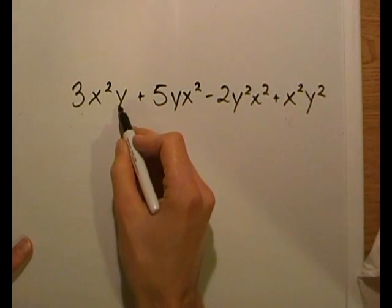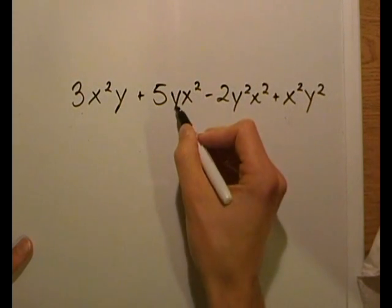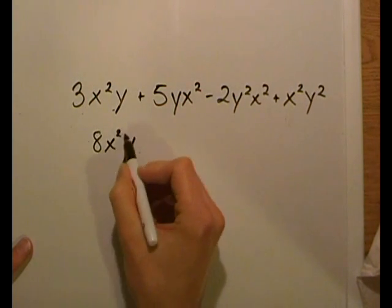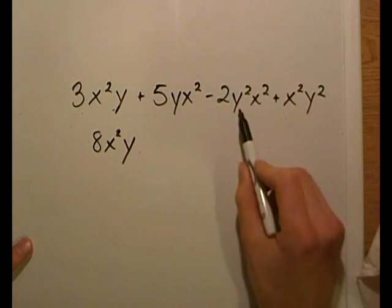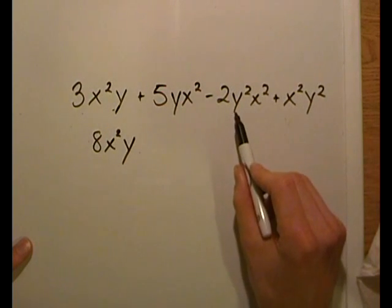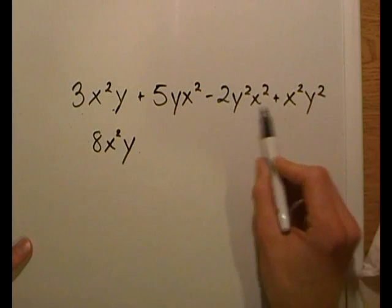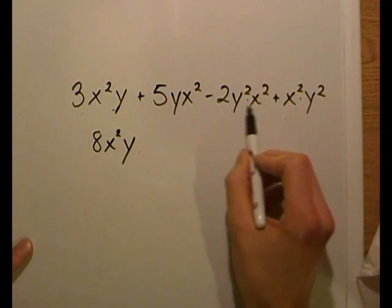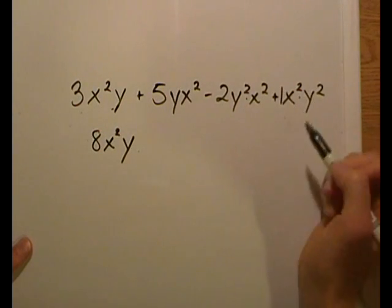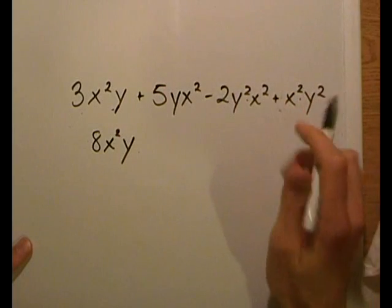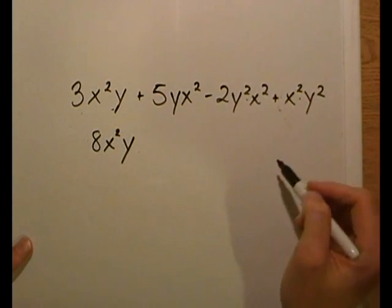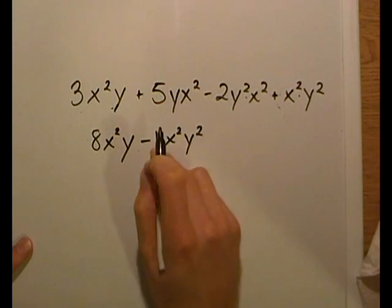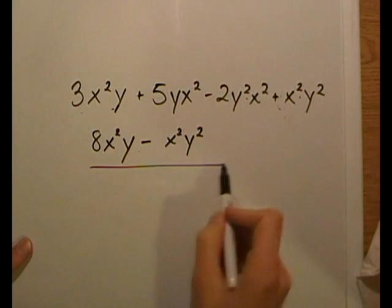The same applies to the other pair of terms: negative 2 y squared x squared and x squared y squared are the same type of term regardless of order, as long as the variables are multiplied together at the same degree. We have negative 2 of these plus 1 of these — the 1 is understood and never written — so negative 2 plus 1 equals negative 1. The negative 1 coefficient is never written out explicitly, so this is your final answer.